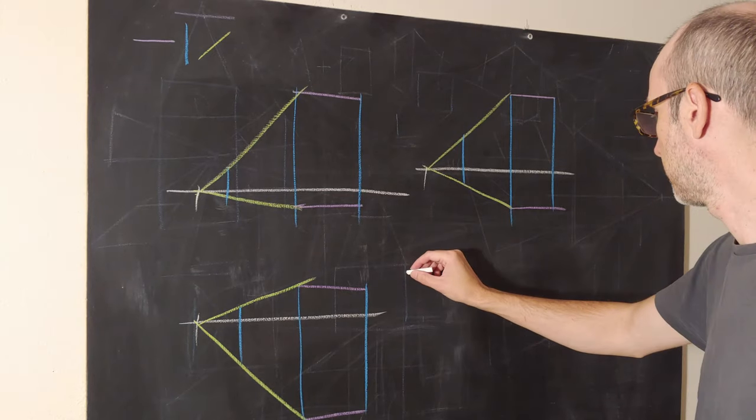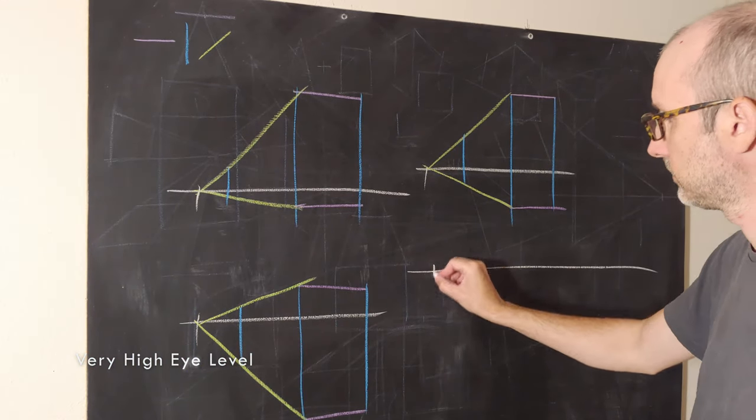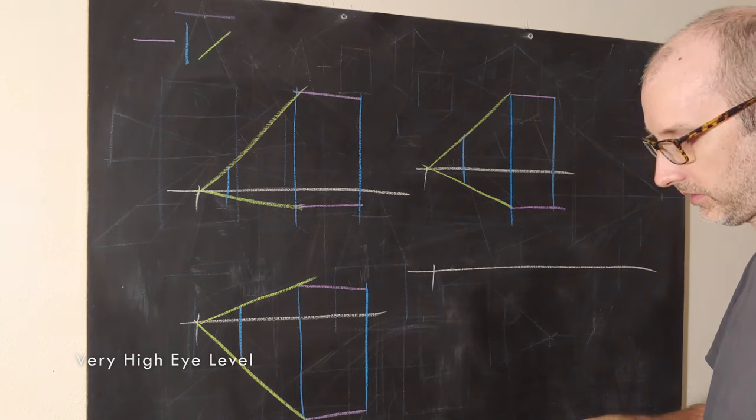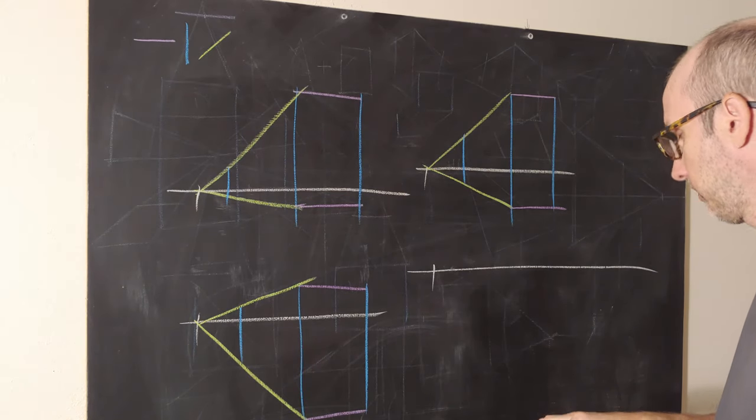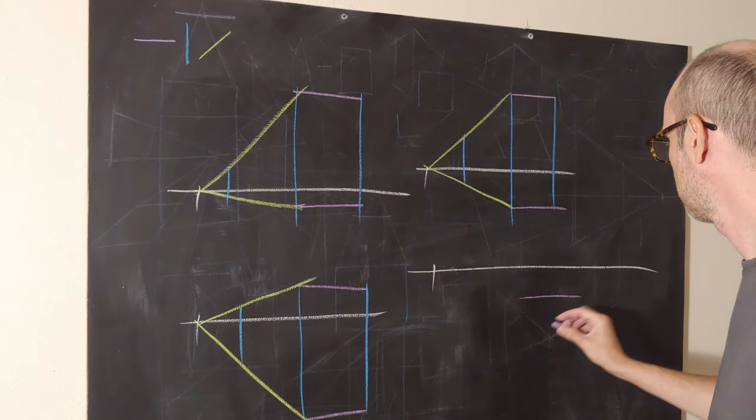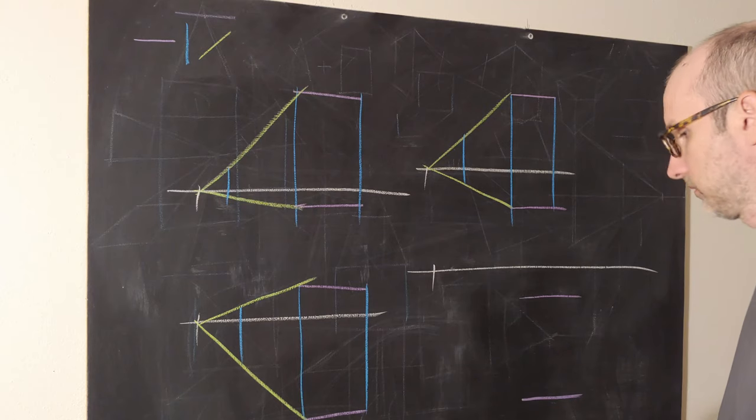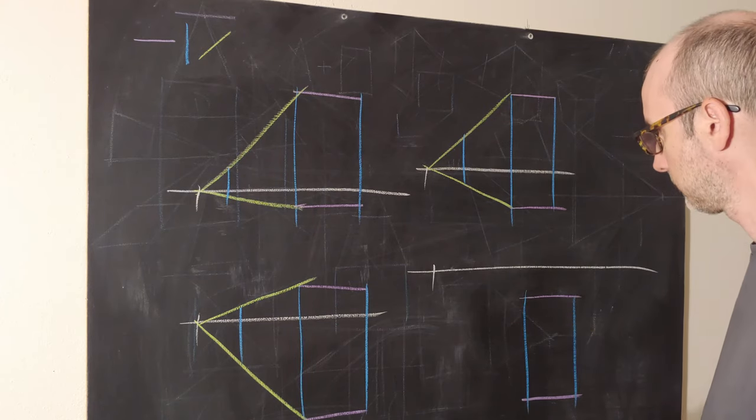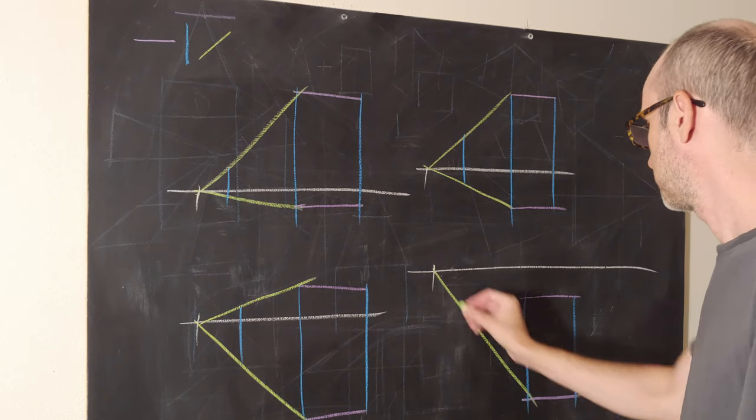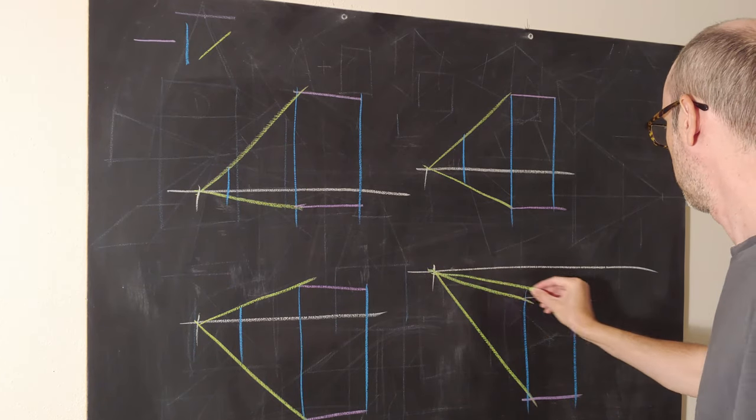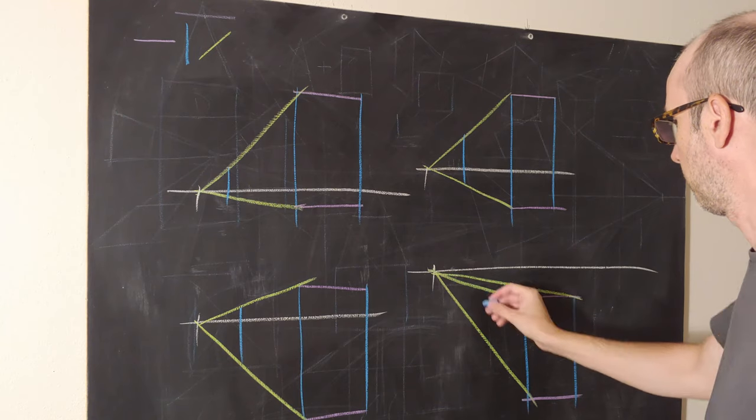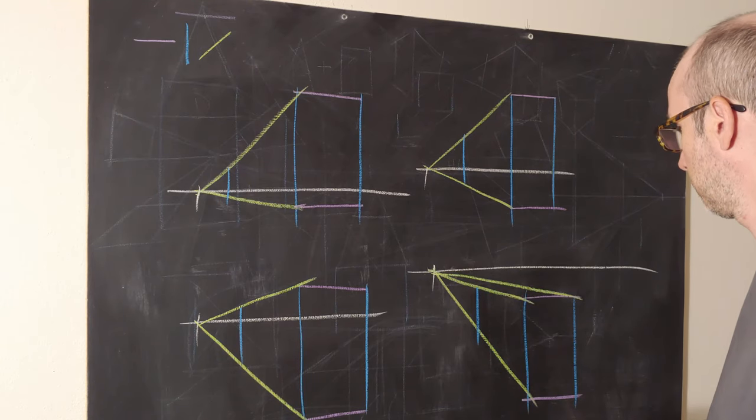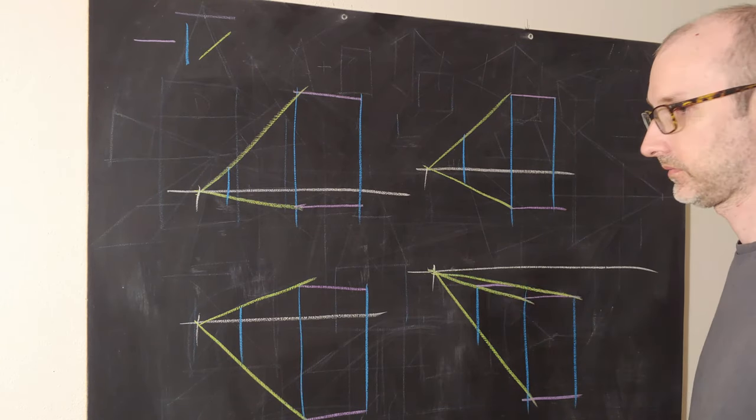And even more extreme, if we're on another tall building, it might look something more like this. Right here, it's pretty obvious that we are looking down on this building.